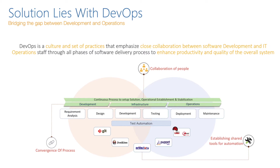If you look at a particular pipeline within a small or big project, it is something similar to what I am showing on screen. The converging of processes — be it CI/CD or tools — and establishing a shared toolset for automation is called DevOps. It works on the basic principle of collaboration of people, be it your development, infrastructure, or operation teams.